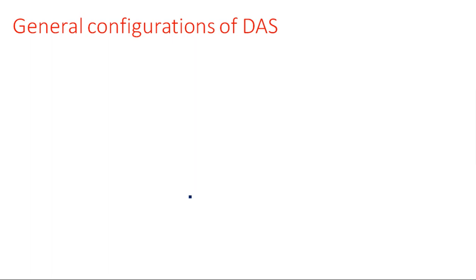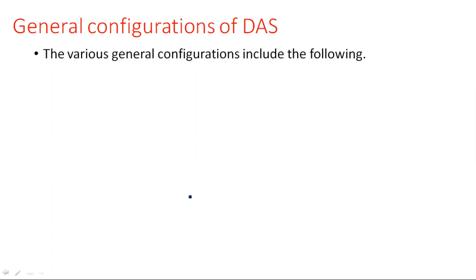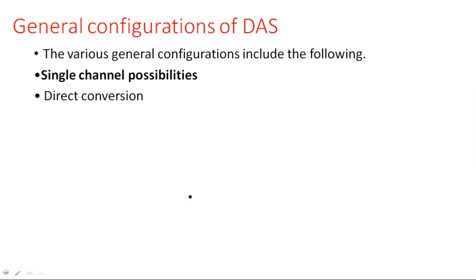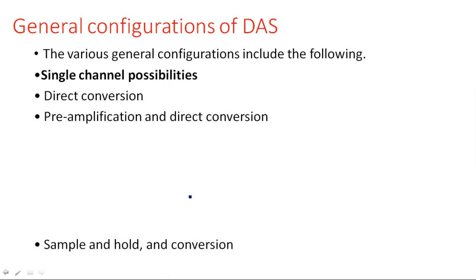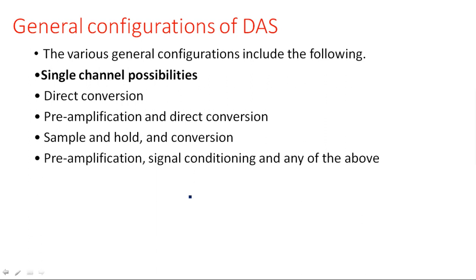Different kinds of general configurations of data acquisition systems are available. The various general configurations include single channel possibilities and multi-channel possibilities. Single channel possibilities are: direct conversion; pre-amplification and direct conversion; sample and hold and conversion; pre-amplification, signal conditioning, and any of the above.